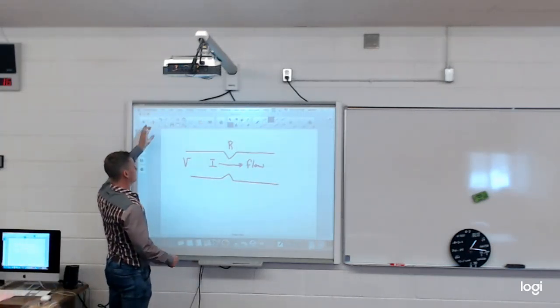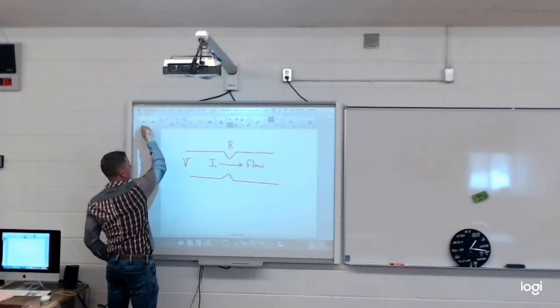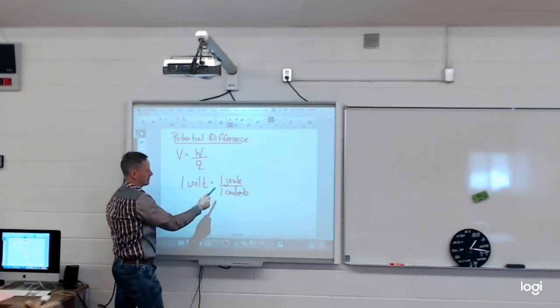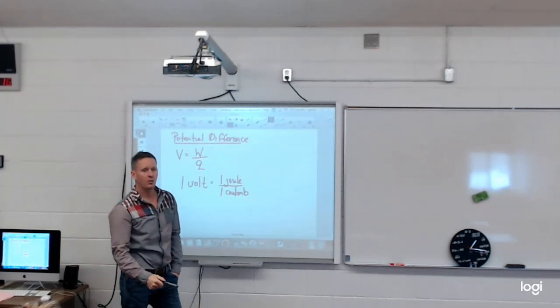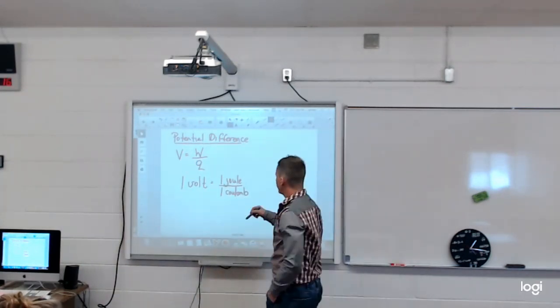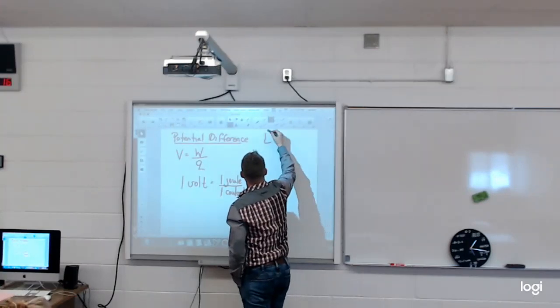So your potential difference is the amount of potential it takes to move one joule. It takes one joule of work to move one coulomb, one volt. And then yesterday we looked at electric field intensity.